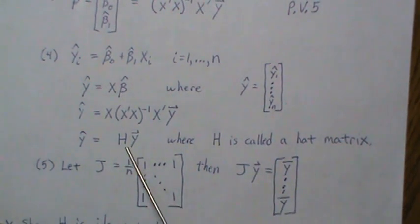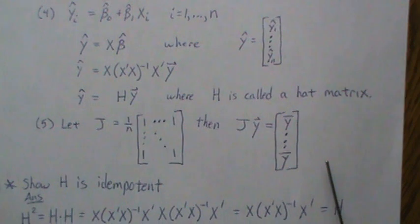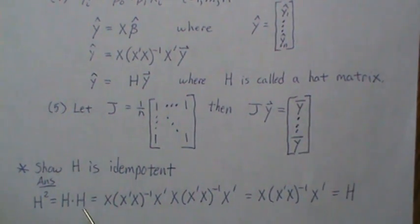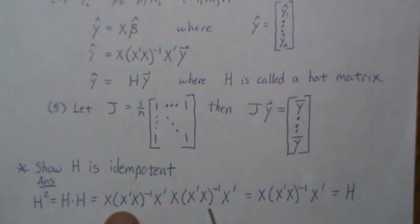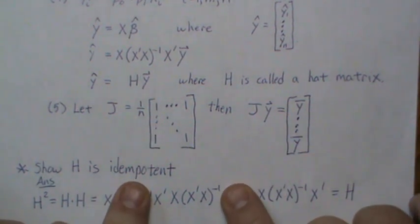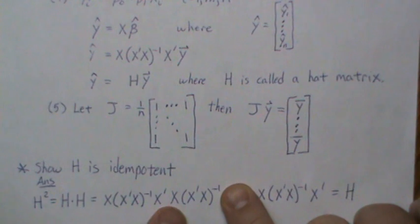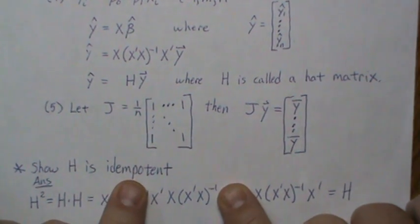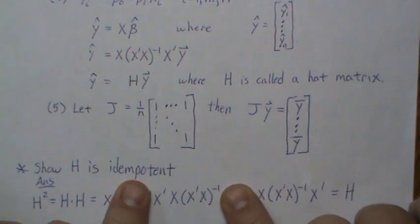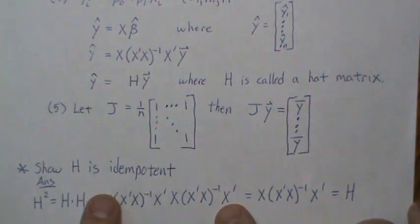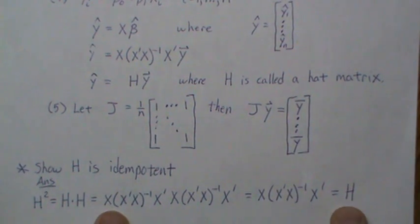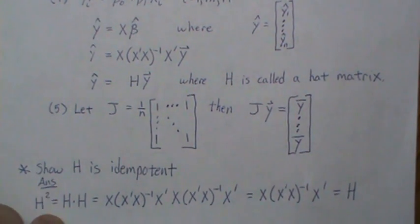H is idempotent, meaning H² = H·H = H. If we fill in what we know about H and cover the middle portion, you get X'X times (X'X)⁻¹, which is the identity matrix. The identity times anything leaves it unchanged, and we're left with H. So H is idempotent.